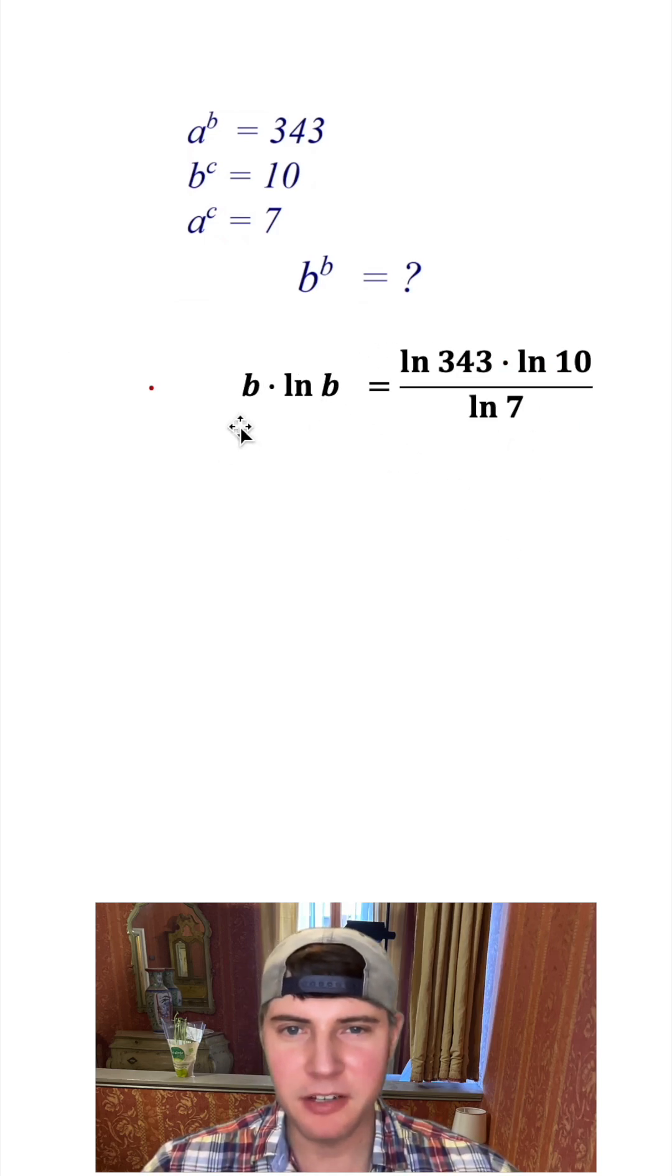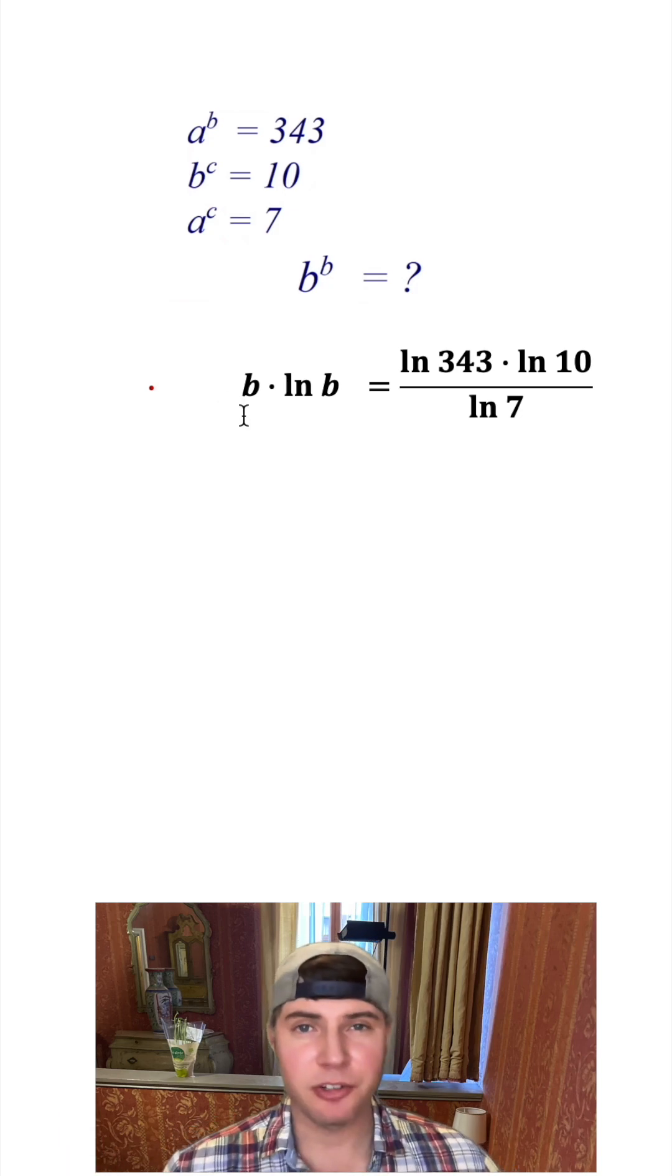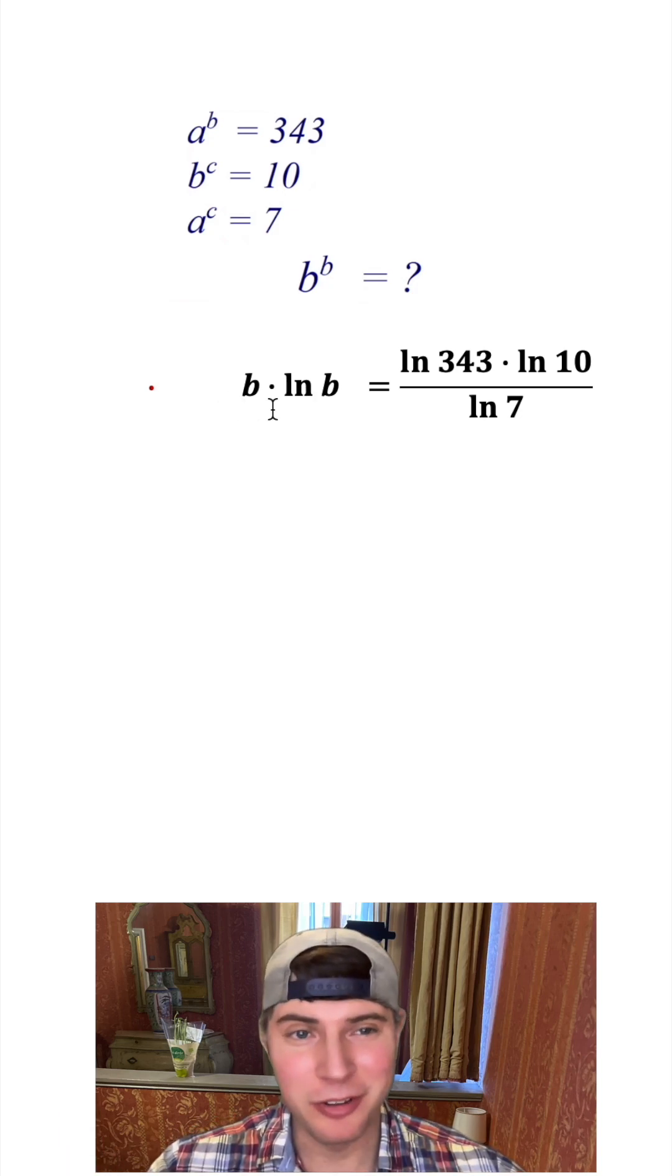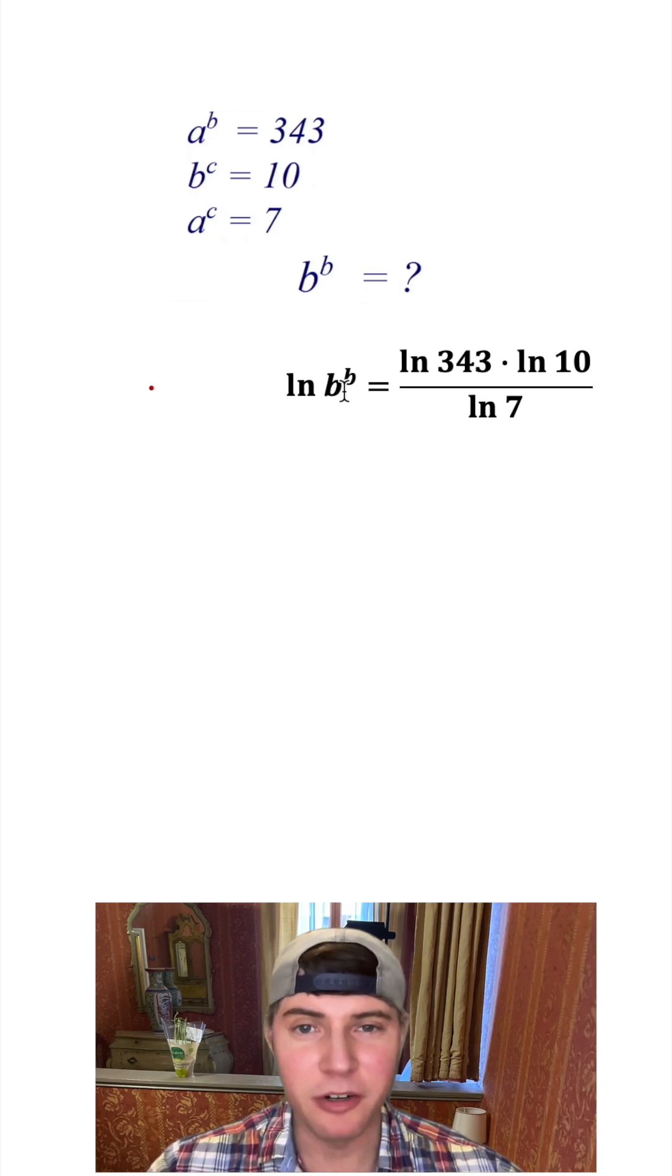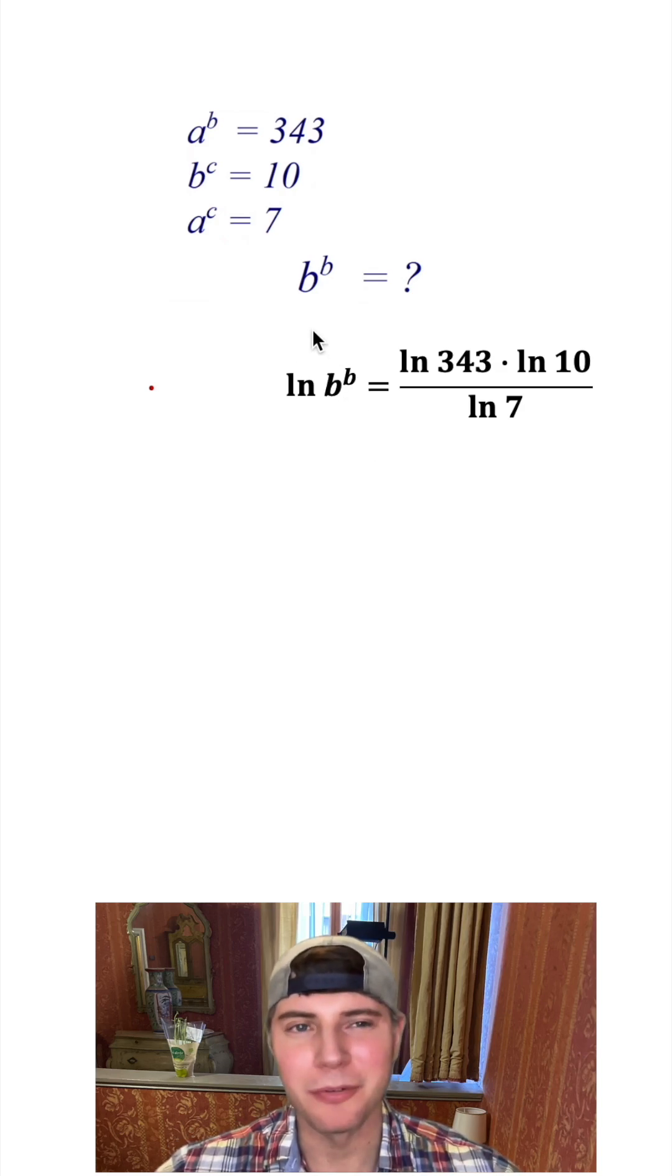This is kind of confusing. I want to move the b to the front because it's b times natural log of b. And if you remember with logarithms, one of the exponents is this thing in the front can be brought up here. So just like what we did earlier where we brought it out, but we can also bring it the other direction. So now we have a b to the b. That's what we were hoping for.